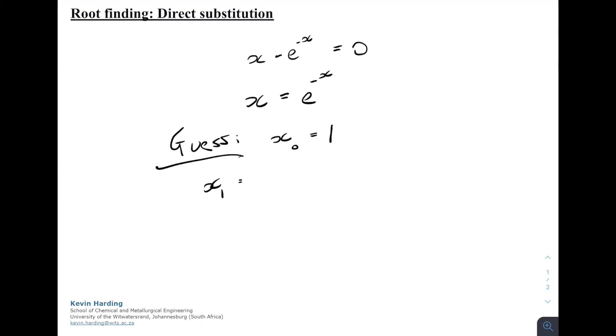So x1 is now going to be e to the minus x naught, which is equal to e to the minus one. So if we substitute that in, we now get a value of 0.36787 and decimal places. So clearly our guess for x naught being one is not accurate, because the left-hand side and the right-hand side of this equation is not equal.